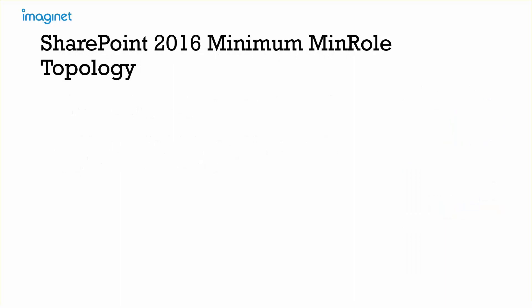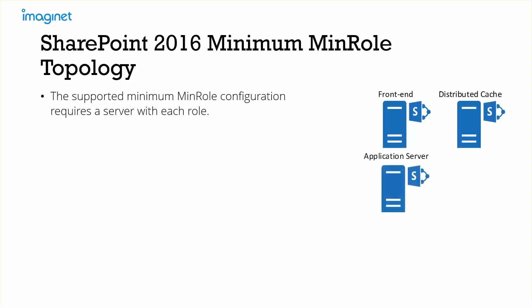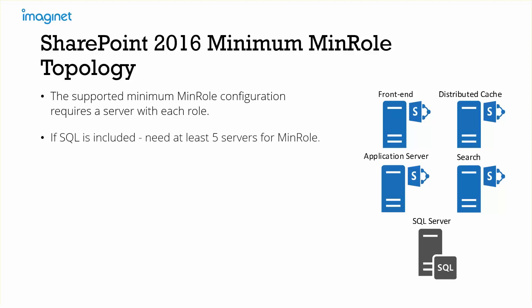Here's the SharePoint 2016 minimum MinRole topology. The supported minimum configuration requires a server with each role: one front end, a distributed cache server, an application server, a search server, and a SQL server — so at least five servers required for MinRole. The minimum configuration does not have any resiliency, so there are single points of failure. This topology is really ideal for a dev or test environment, or possibly a smaller organization.